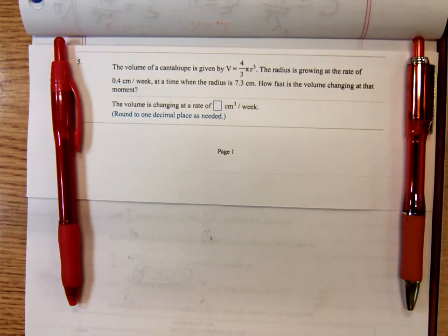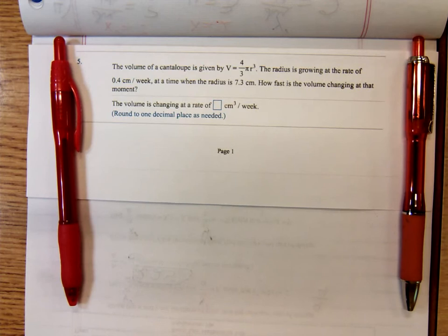The volume of a cantaloupe is given by V equals four-thirds pi r cubed. That's not a mystery. That's just the formula for the volume of a sphere and I suppose the cantaloupe is spherical shaped. The radius is growing at the rate of 0.4 centimeters per week at a time when the radius is 7.3 centimeters. How fast is the volume changing at that moment?